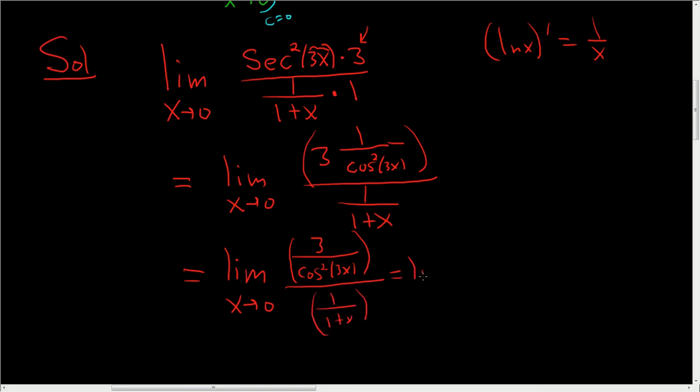So this is the limit as x approaches 0. So 3 over cosine squared 3x divided by this thing here. When you divide, you multiply by the reciprocal. This is 1 plus x over 1. Let's go ahead and plug in 0 now.